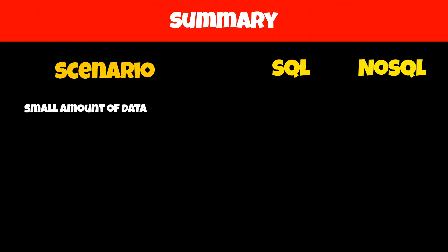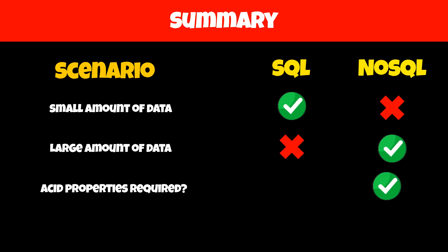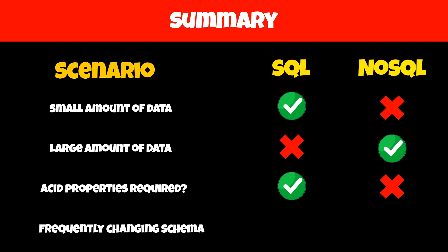To summarize: if you have a small amount of data, SQL works best; if you have a huge amount of data, NoSQL works best. If you need ACID properties, select SQL; if you don't require them, select NoSQL. If the schema is frequently changing, select NoSQL; otherwise, select SQL. You can check out the video on ACID properties to learn more. Follow the channel for more such videos.